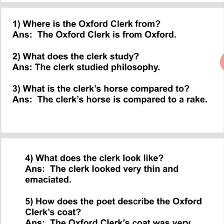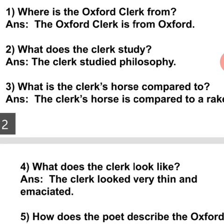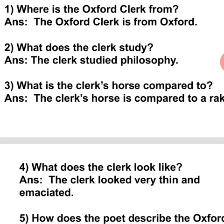Fourth question: What does the clerk look like? The clerk looked very thin and emaciated. Emaciated means somebody who has not eaten for a long time and therefore is weak and feeble — to lose weight or become weak due to lack of food.